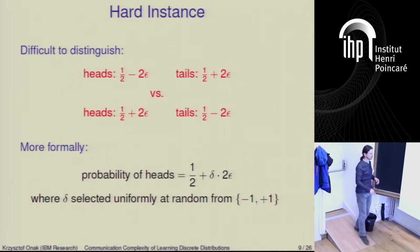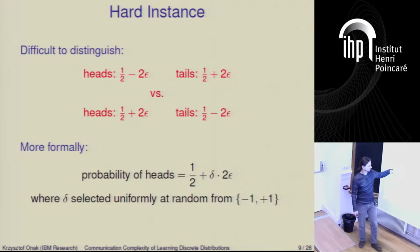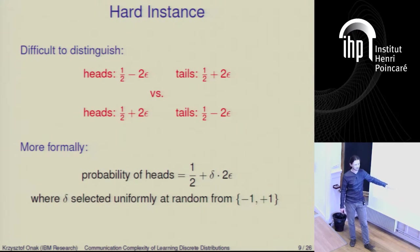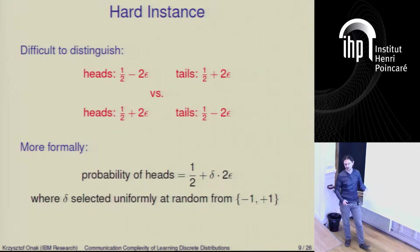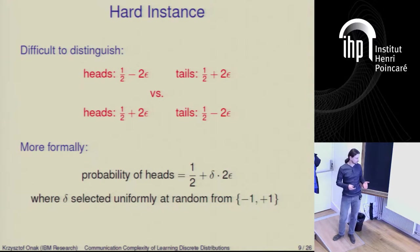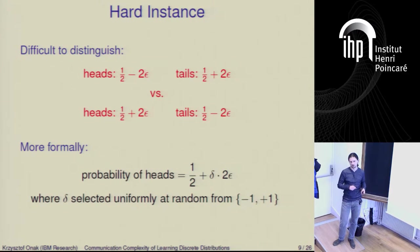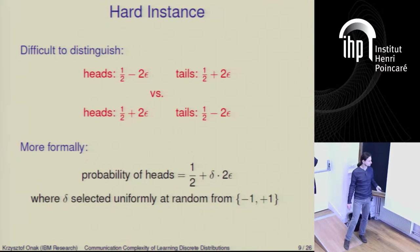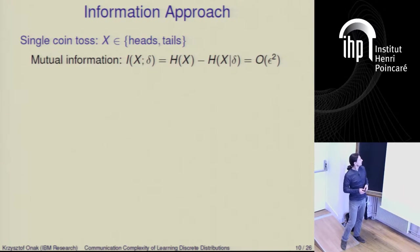Whoever tries to predict delta, even without looking at any coin toss, can of course be correct with probability one half, just by answering randomly. But we want to show that if you use a small number of samples, then you'll be very unlikely to go far away from one half — the probability of your success is going to be one half plus something tiny.